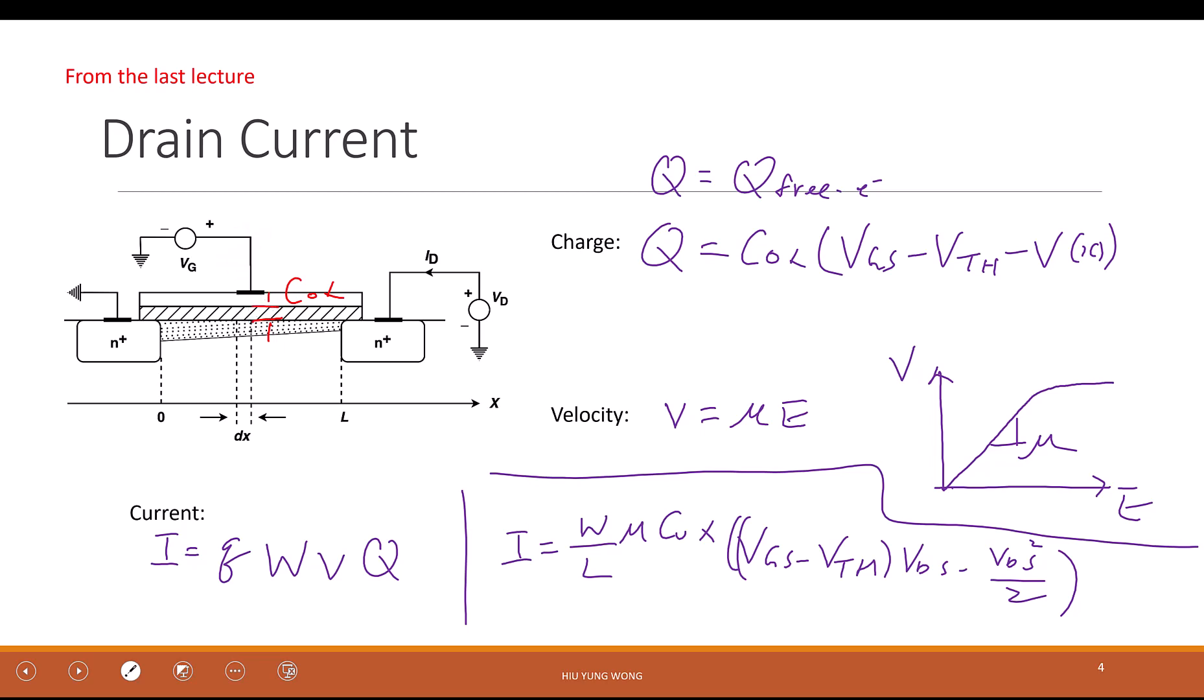So the reason we can control the resistance is because we change the gate voltage and we, through this capacitor, we call capacitive coupling. This is a keyword that you want to say if you are in an interview. Capacitive coupling. You couple the electric field.